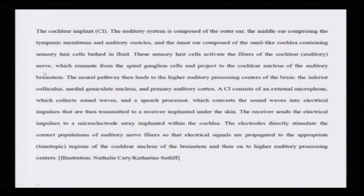This is how the cochlear implant looks. The auditory system is composed of the outer ear, middle ear comprising the tympanic membrane and auditory ossicles, and the inner ear composed of the snail-like cochlea containing sensory hair cells based in a fluid. These sensory hair cells activate the fibers of the cochlear nerves, which emanate from the spiral ganglion cells and project to the cochlear nucleus of the auditory brain stem — the neural pathway leading to higher auditory processing centers including the inferior colliculus, medial geniculate nucleus, and primary auditory cortex.